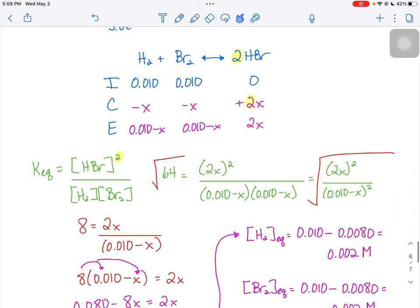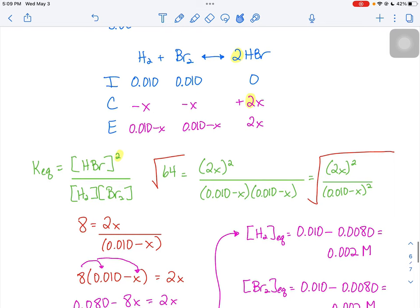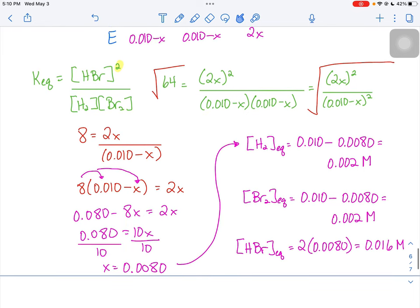If we plug those into our equilibrium line there, the equilibrium for both the hydrogen and the bromine is 0.010 minus X. So if X is 0.008, we subtract, and we can find our values for hydrogen and bromine.